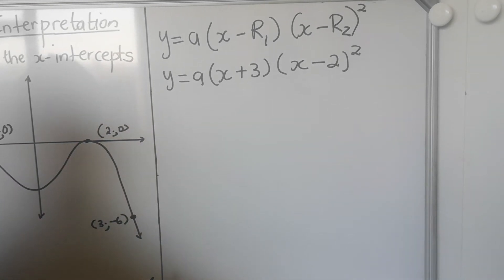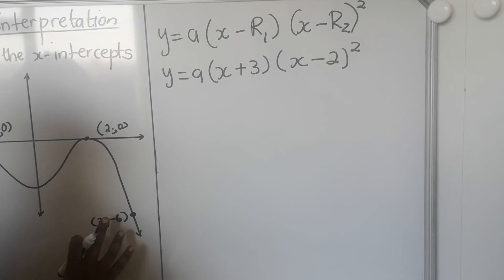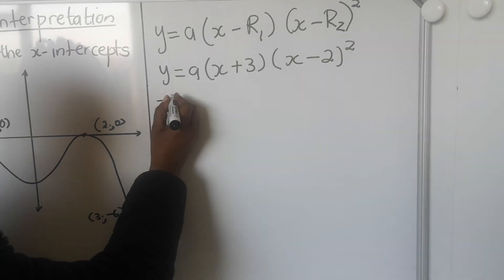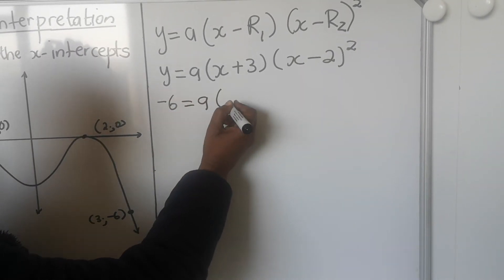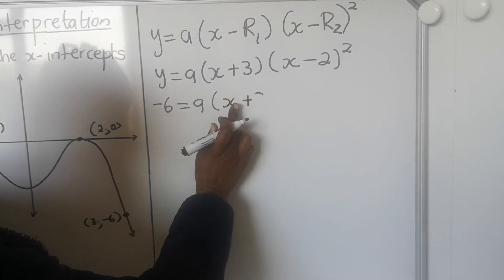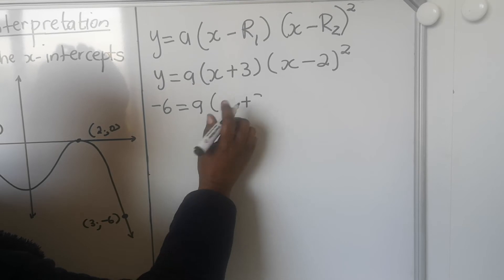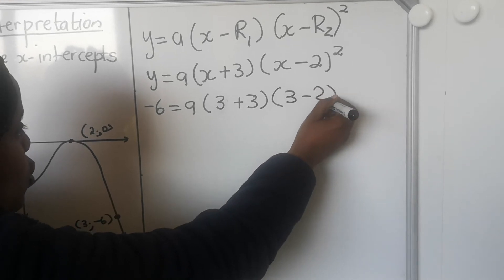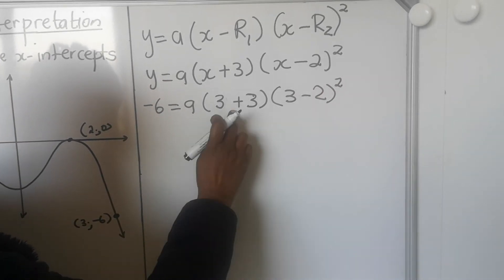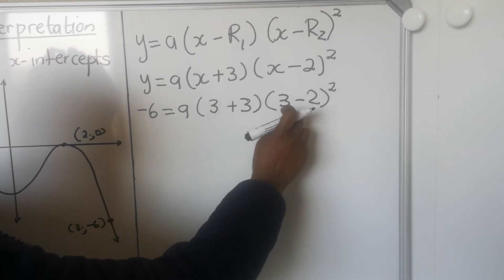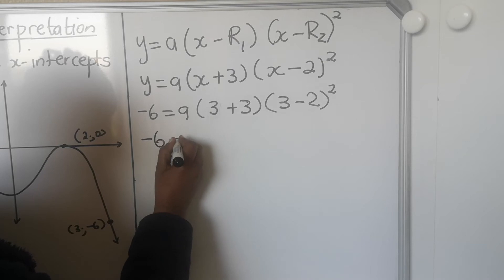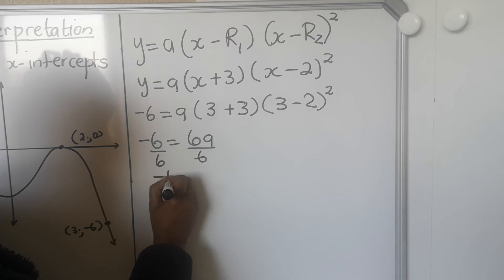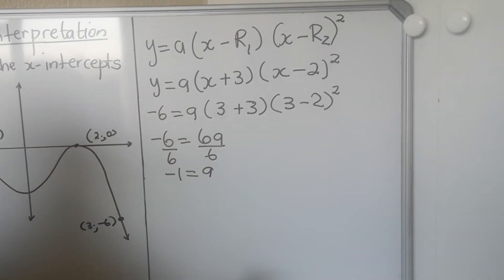Because you are calculating for 'a', you're going to use any other point given on the graph. We're given the point (3, minus 6), so x is 3 and y is minus 6. Substituting: minus 6 equals a times (3 plus 3) times (3 minus 2) squared. That gives minus 6 equals a times 6 times 1, so minus 6 equals 6a. Dividing both sides by 6 gives minus 1 equals a, so a is minus 1.